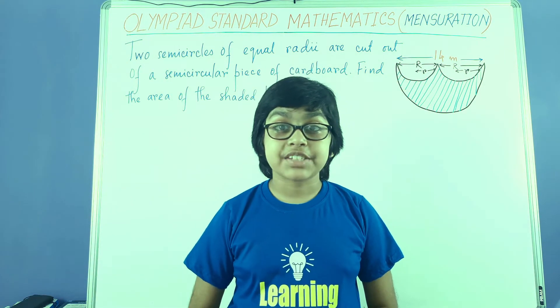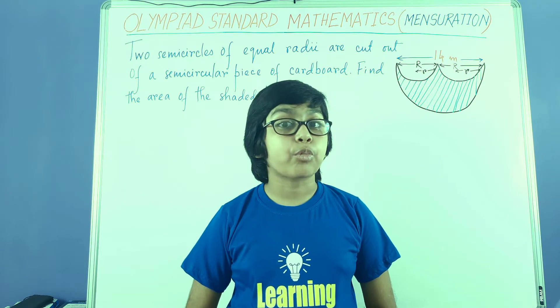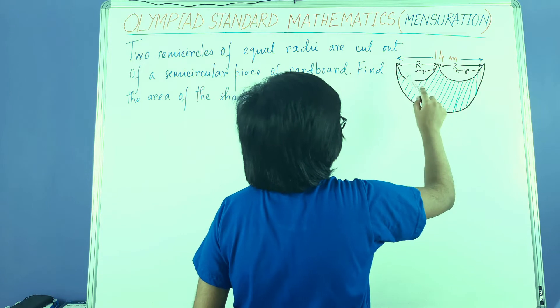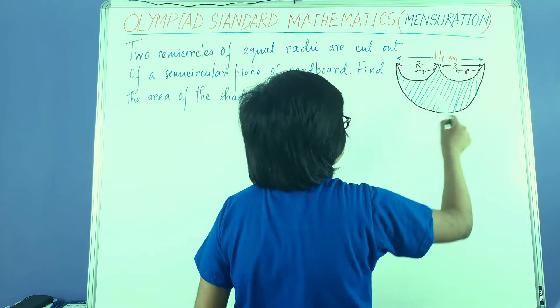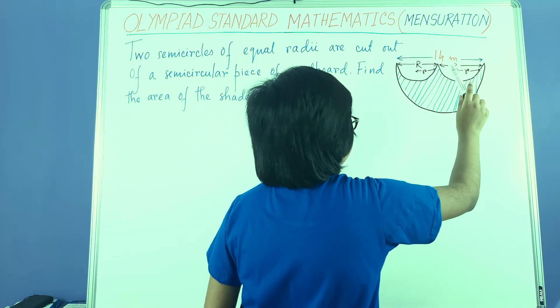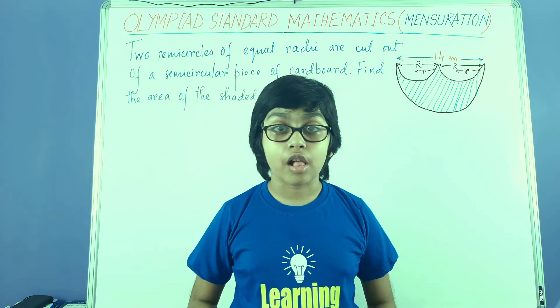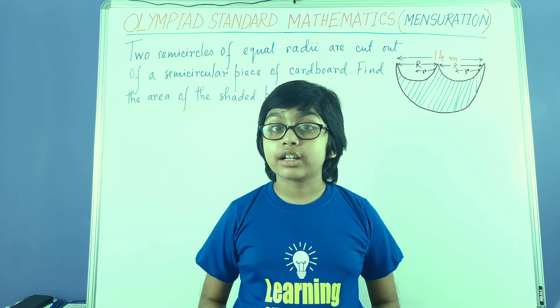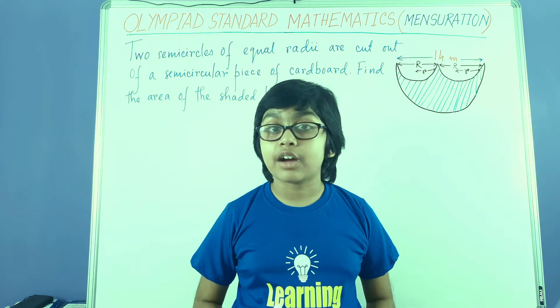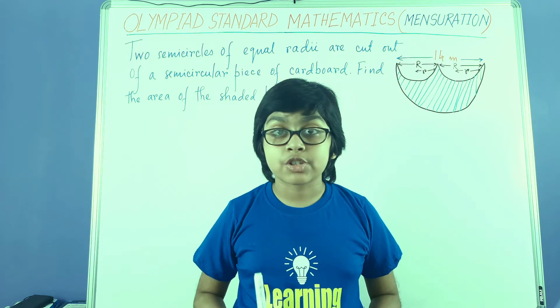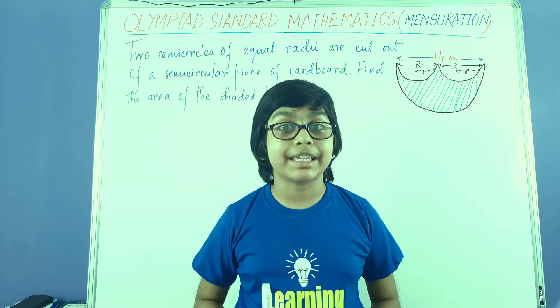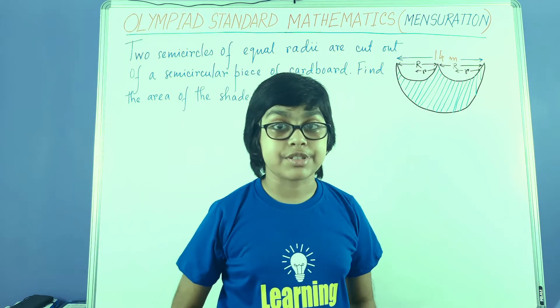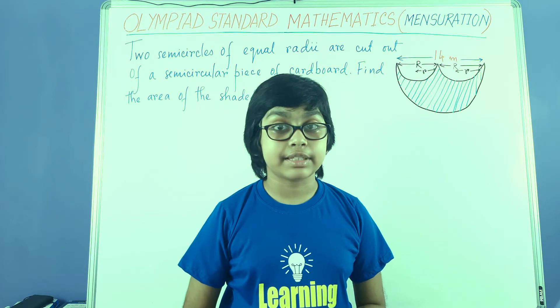So now we can move on to finding the area of the shaded portion. How to do so? We need to subtract the area created by these two small semicircles from the area of the big semicircle. The area of a circle is pi r squared, so the area of a semicircle would be half of that, half pi r squared. And in this case, r would be capital R, because capital R is the radius of the big semicircle. So first let's note that down.